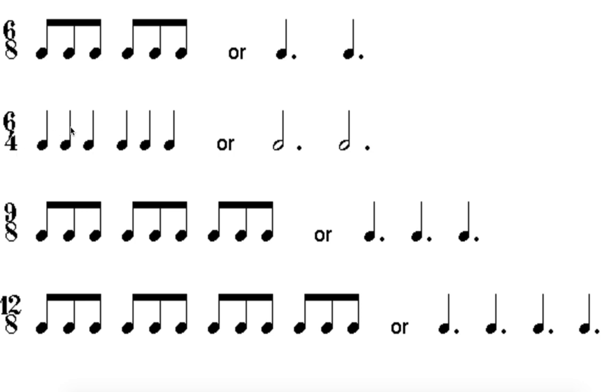And 6/4, also a compound meter, we would have six quarter notes because four is at the bottom. So six quarter notes, or two dotted half notes, because each one of these is going to equal three quarter notes. So this equals six quarter notes.